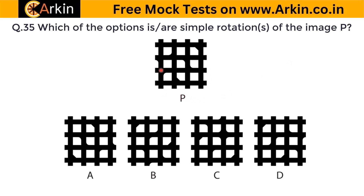Which of the options is a simple rotation of image P? To find out, let's first focus on the center part. If we compare with option A, this curve on the top right has come to the bottom left — that means it has been rotated 180 degrees. Comparing: this is matching with this — correct; this is matching with this — again correct; this is matching with this — again correct; and this is matching with this — correct. So A will be correct. Now here it is turned 90 degrees and we check whether it's correct with a 90-degree rotation: this will come here — correct; this will come here — again correct; this should come here — again correct. So B is also correct.